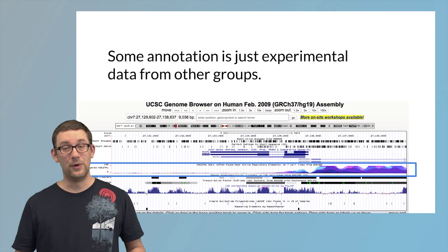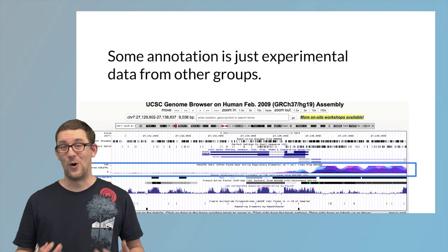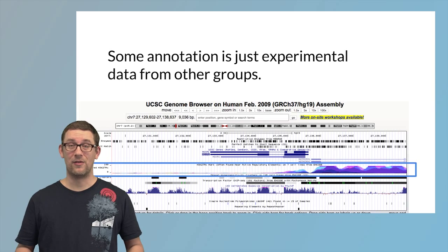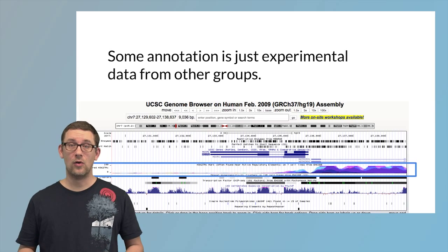Some of these tracks are really just other types of experimental data coming from other labs. In this case there's a ChIP-seq track from ENCODE that measures a specific type of histone modification. When you are annotating using other types of experimental data you should always think about the fact that this experimental data, while hopefully well processed and well prepared, always has certain biases and problems. So you should always be a little careful about interpreting it.